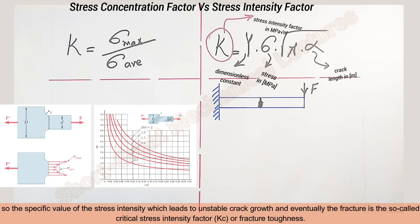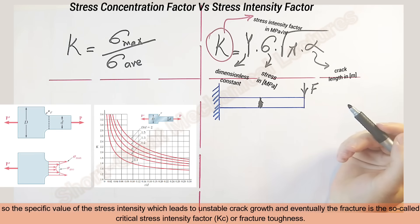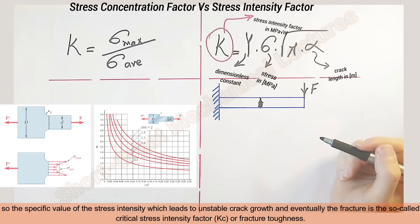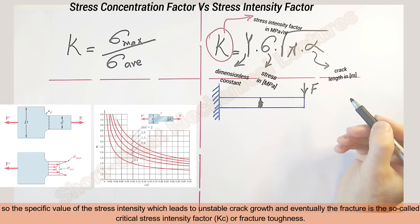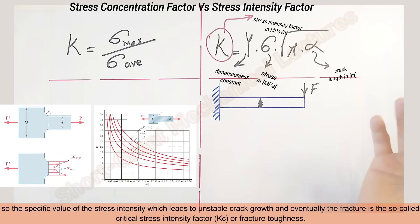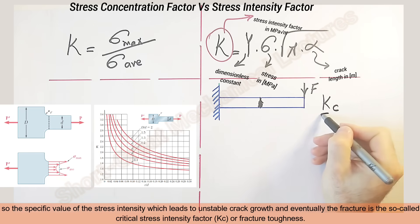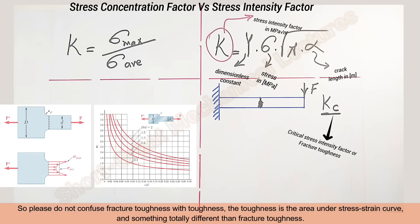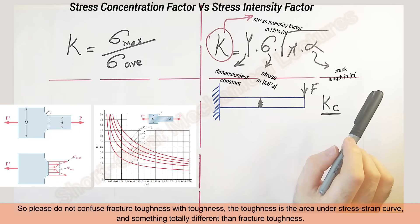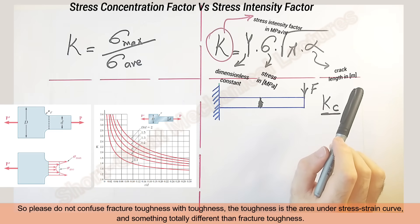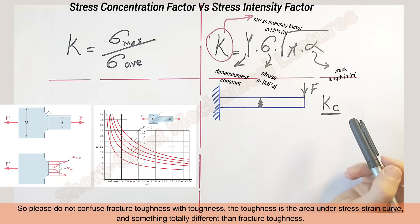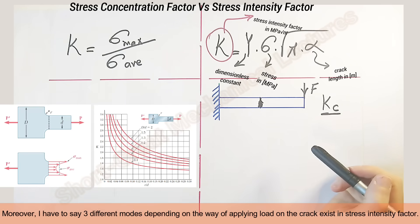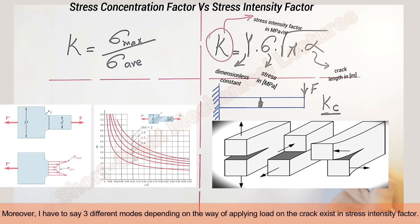The specific value of stress intensity which leads to unstable crack growth and eventually fracture is the so-called critical stress intensity factor, Kc — or fracture toughness. Please do not confuse fracture toughness with toughness: toughness is the area under the stress-strain curve and is something totally different from fracture toughness. Also, I have to mention there are three different modes depending on the way of applying load on a crack that exist in the stress intensity factor.